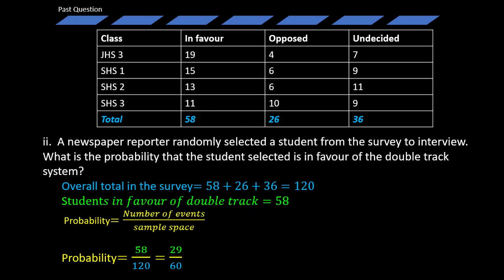That simplifies to 58 over 120, which equals 29 over 60. So the probability of randomly selecting a student who is in favour of the double track system is 29 over 60.